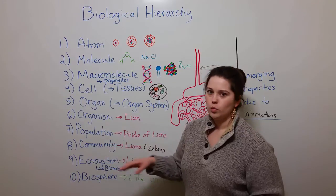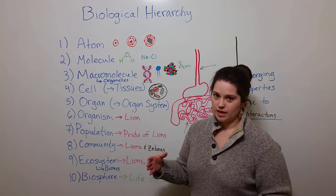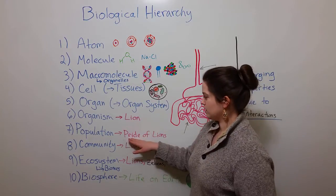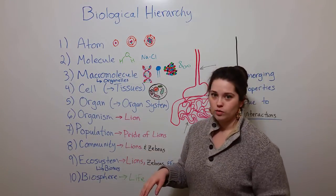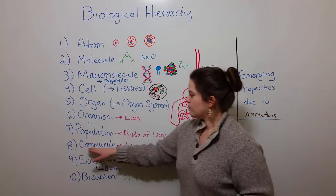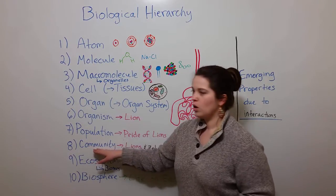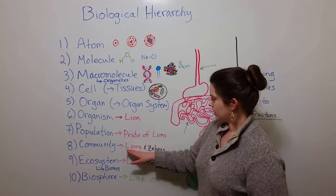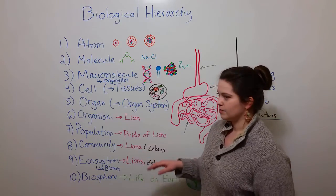A population would be a group of organisms of the same type, for example, a group of lions, otherwise known as a pride of lions, would be a population. A community is when you have multiple populations of different types of organisms, for example, lions and zebras.